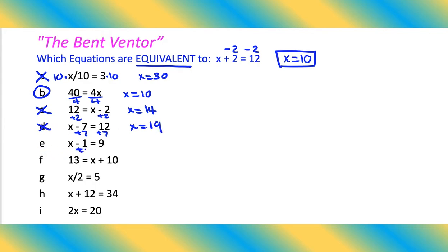E, we would add 1, add 1, x equals 10. There's a winner, we got one. I'm going to box in the x equals 10s. There we go.